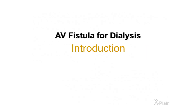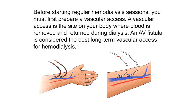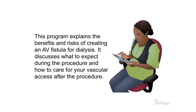AV Fistula for Dialysis — Introduction. Before starting regular hemodialysis sessions, you must first prepare a vascular access. A vascular access is the site on your body where blood is removed and returned during dialysis. An AV fistula is considered the best long-term vascular access for hemodialysis. An AV fistula causes the vein to grow larger and stronger, making it easier to access your blood. This program explains the benefits and risks of creating an AV fistula for dialysis, what to expect during the procedure, and how to care for your vascular access afterward.